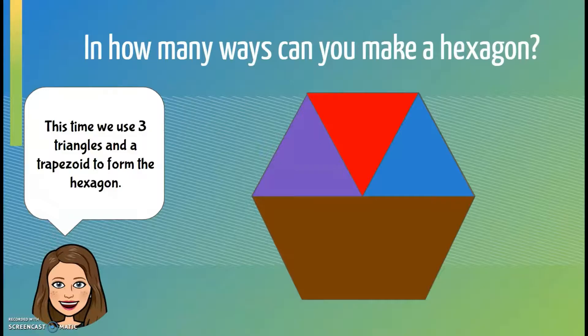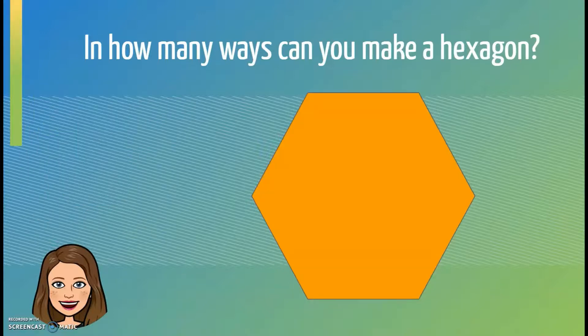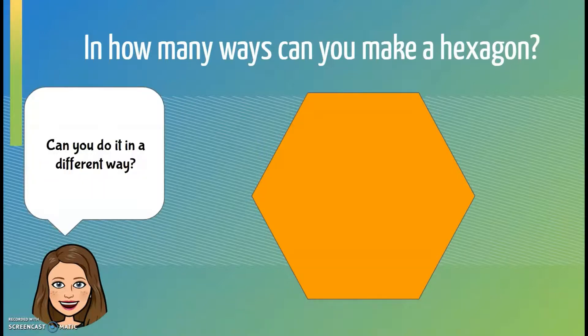I wonder if we could do it a different way. I wonder if we can replace this trapezoid with three more triangles, and that way it would be six triangles. Can you think of a different way?